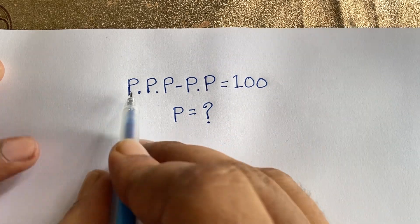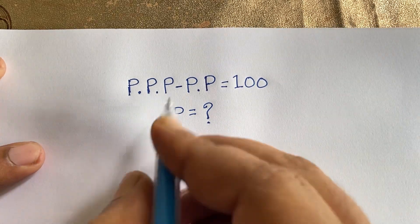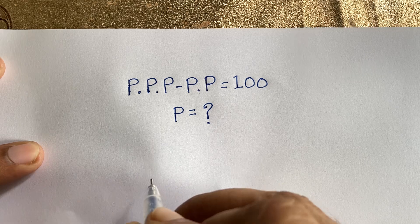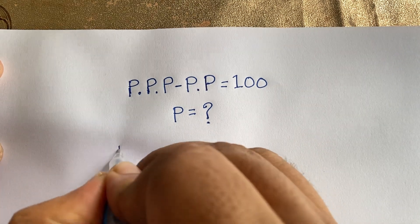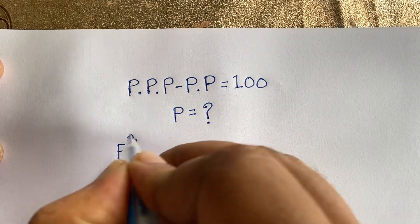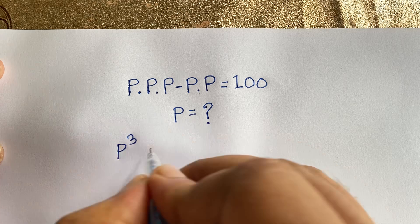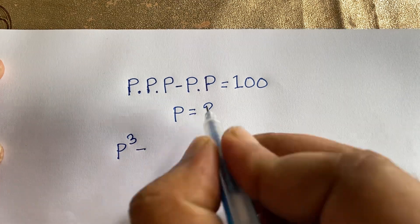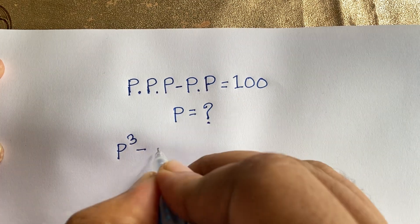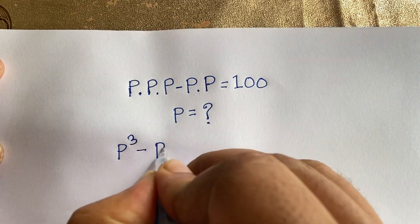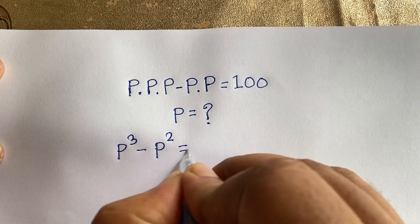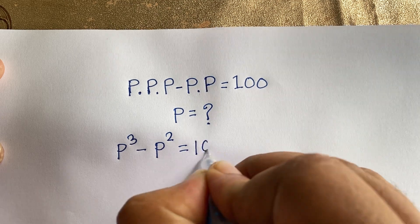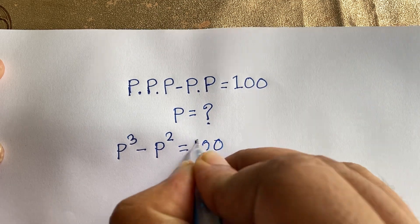So P times P times P — I can say that like this equation — it will be P to the power 3. Because of that, here is P to the power 3 minus P times P, which will be P to the power 2, is equal to 100.